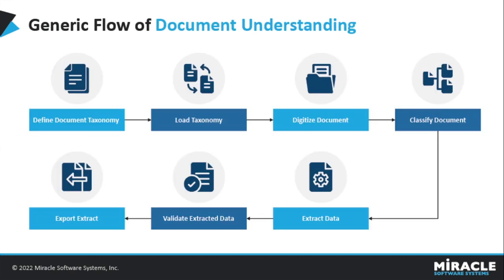Now let us see the general flow of document understanding and the document processing workflow. Here are the steps one needs to follow to create a workflow to process any kind of document: first is Define Document Taxonomy, then Load Taxonomy, Digitize Document, Classify Document, Extract Data, Validate Extracted Data, and Export Extract.